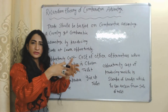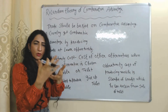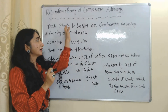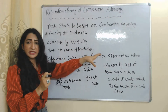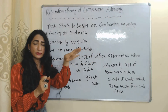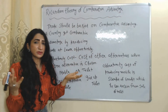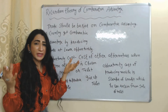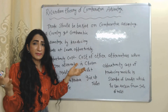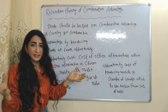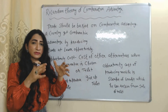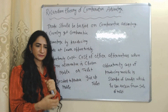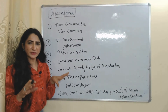So we can say opportunity cost is the cost of other alternatives when one alternative is chosen. According to this theory, we should do trade based on comparative advantage, and we can receive comparative advantage by producing goods at lower opportunity cost.